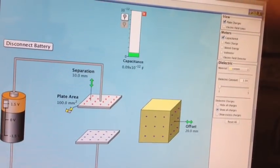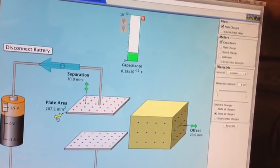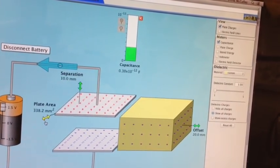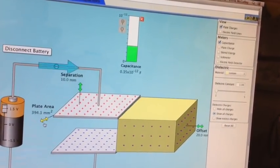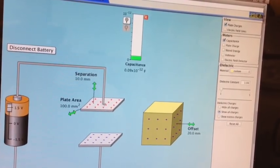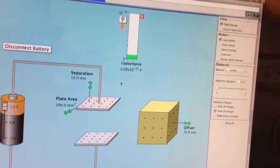The reason this happens is as we make a larger area, there's more room to store charges, so you get a larger capacitance. A smaller area gives you less room for charges, so it's a worse capacitor.